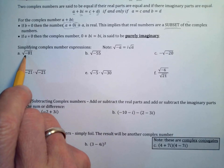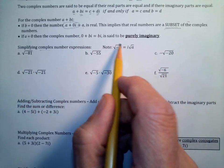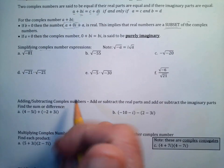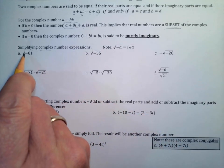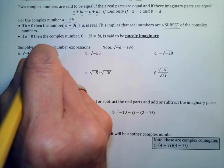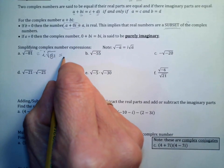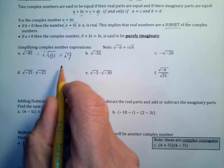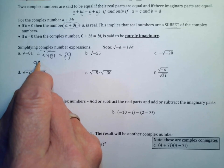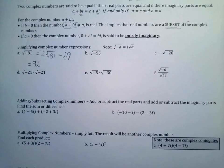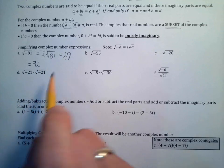Let's simplify some complex expressions. For √(-81): first take out the negative as i, so we get i × √81, and √81 = 9. We write this as 9i rather than i9 — just like we write 2x instead of x2, we put the coefficient before i.